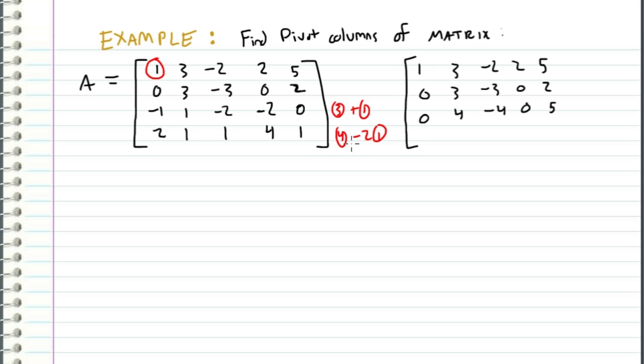And then we take this row and subtract two times the first row. So we get a zero right here, a negative five right here, one minus a negative four so a positive five right here. And then we have four minus four, which is zero, and one minus ten, which is negative nine.